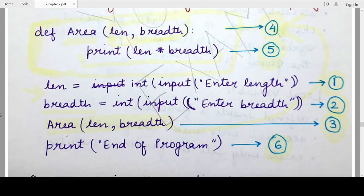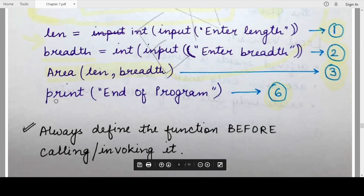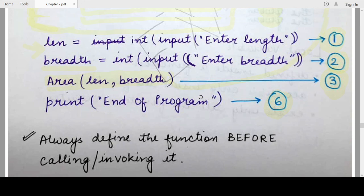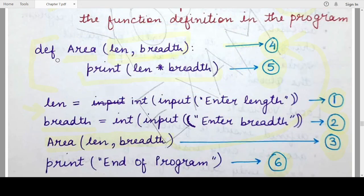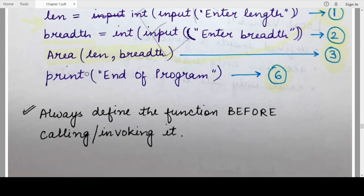As you have seen, the input statements for length and breadth were encountered first, then on the function call the flow of control got transferred inside the function, and as soon as there were no more statements to execute inside the function, the control transferred back outside and the last statement of the program was executed. This is how the interpreter changes the flow of control, and that is why it is very important to define the function before invoking it — so the interpreter knows where to transfer the flow of control whenever a function call is encountered.